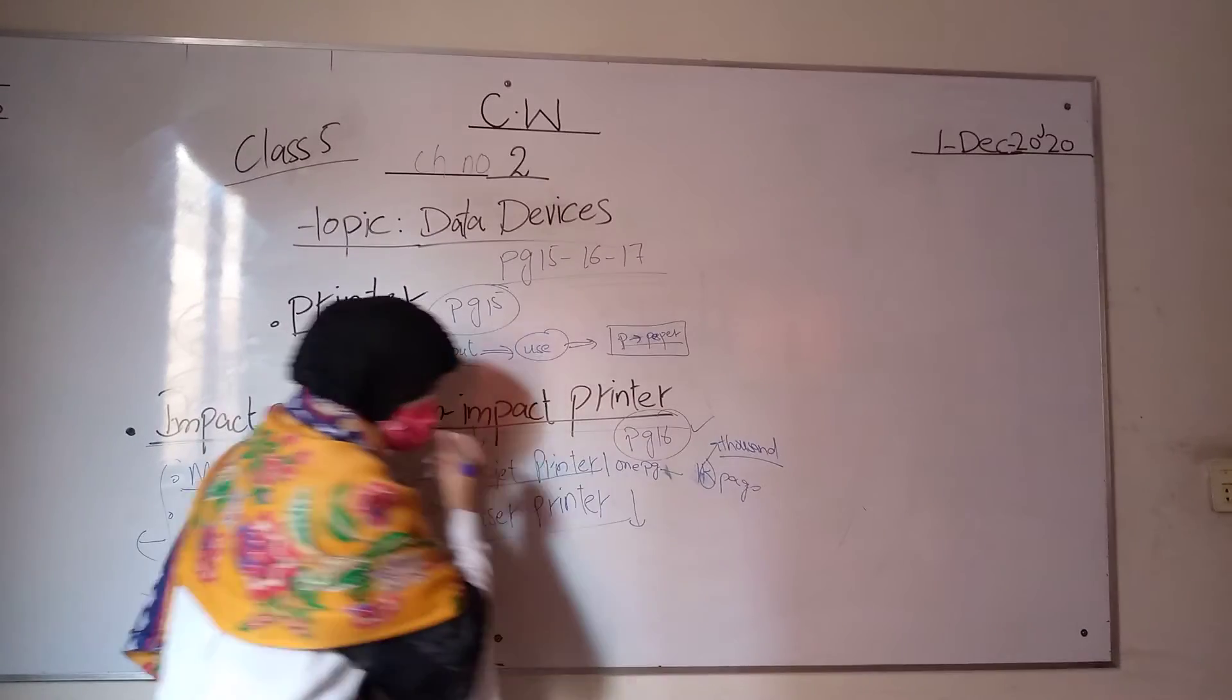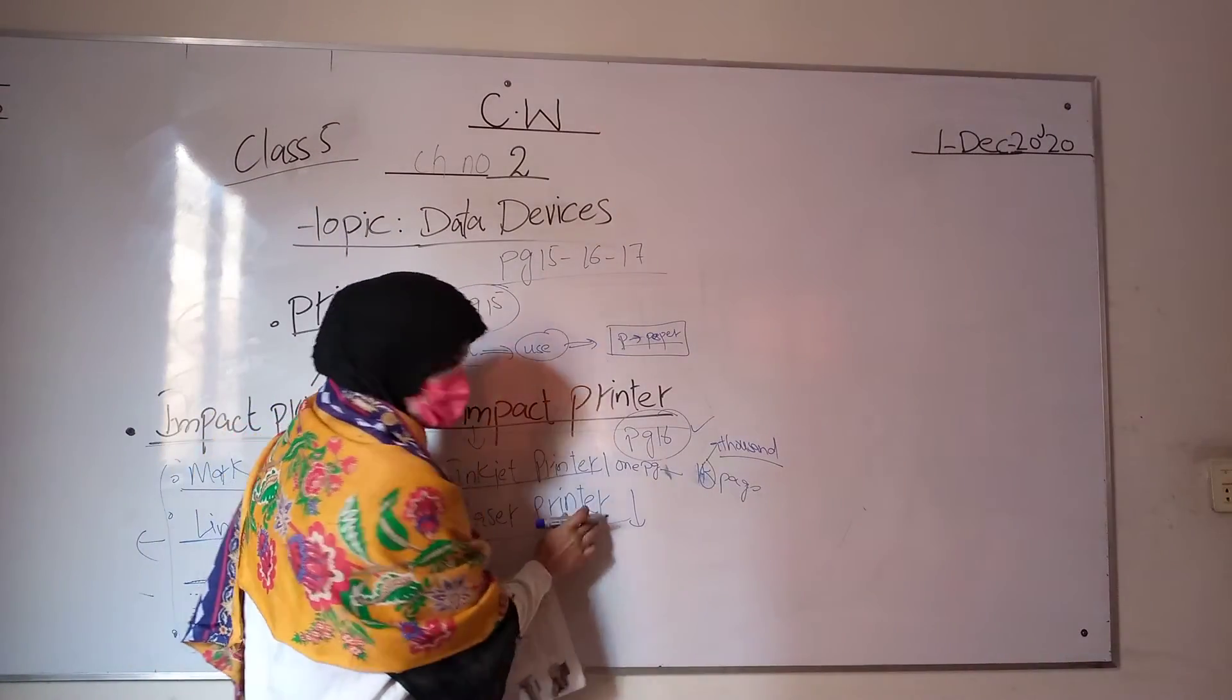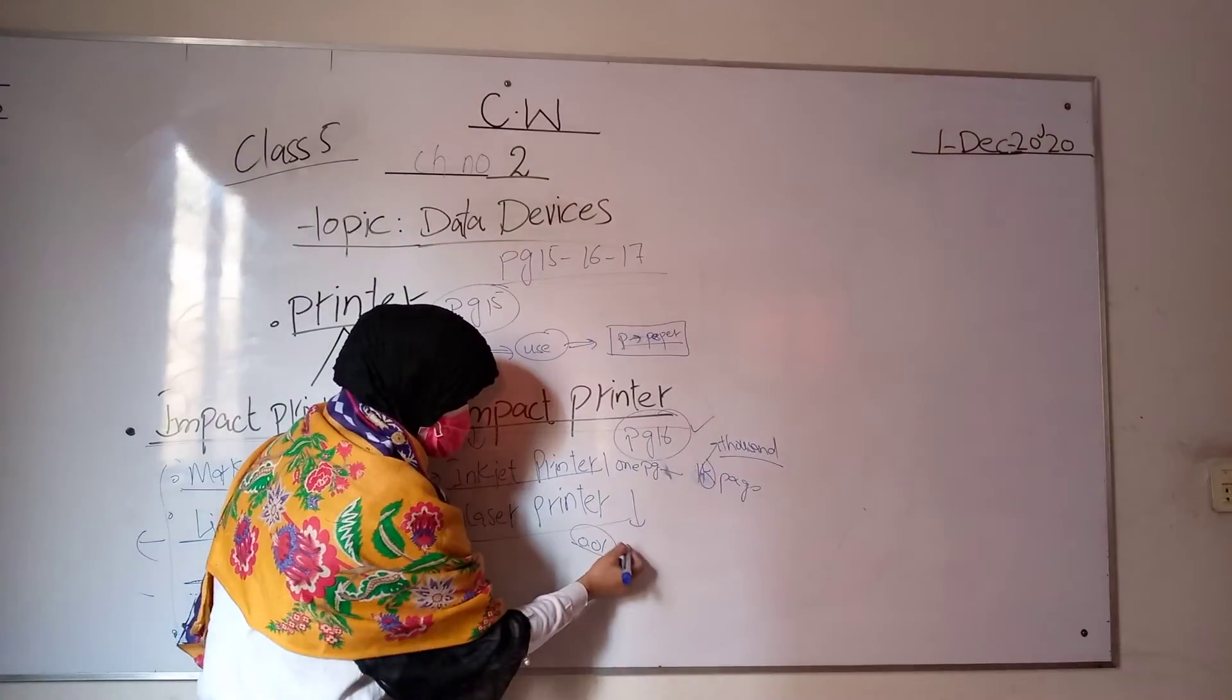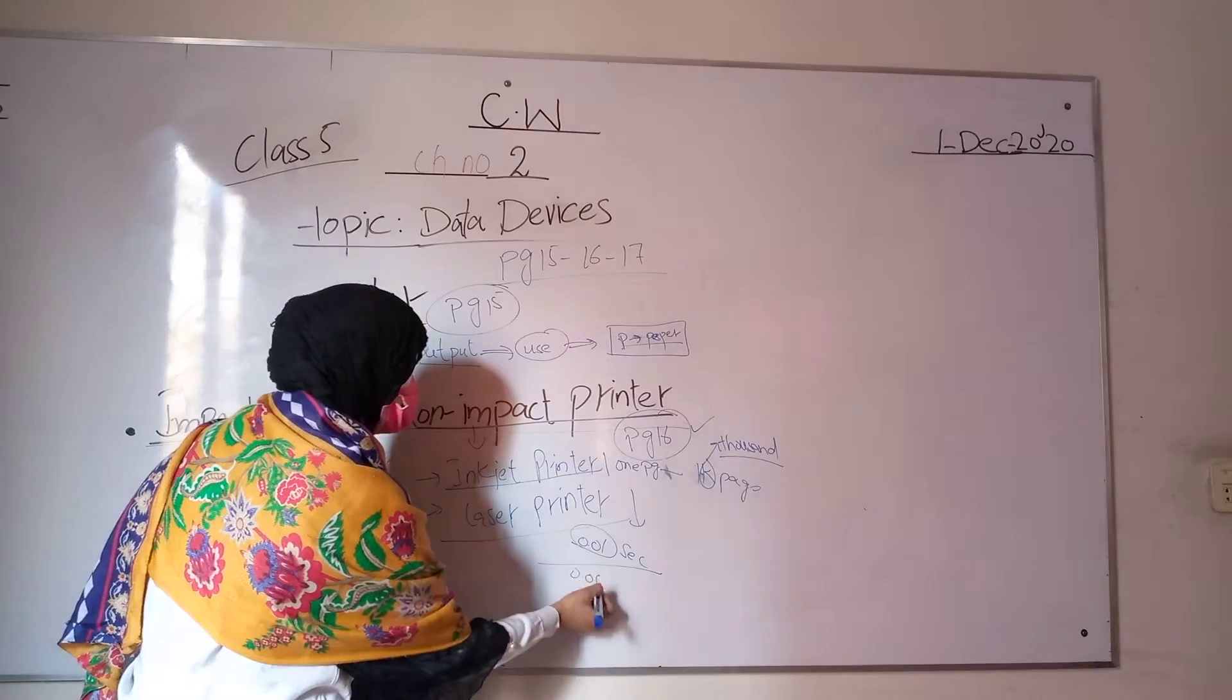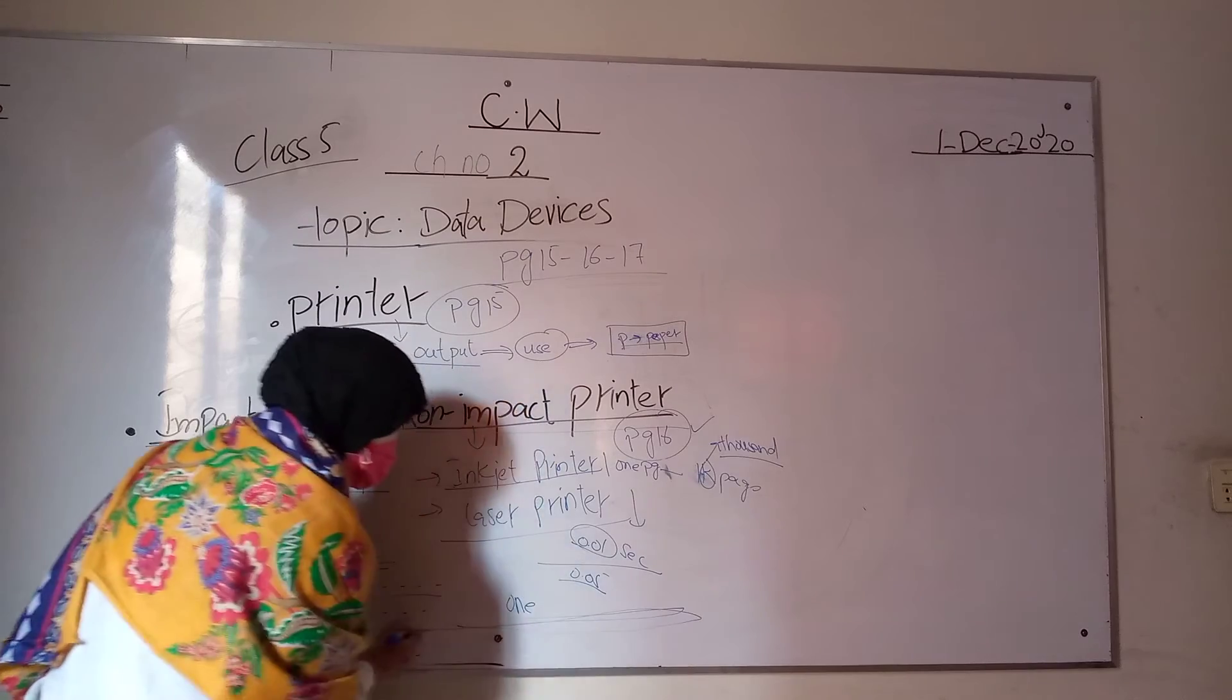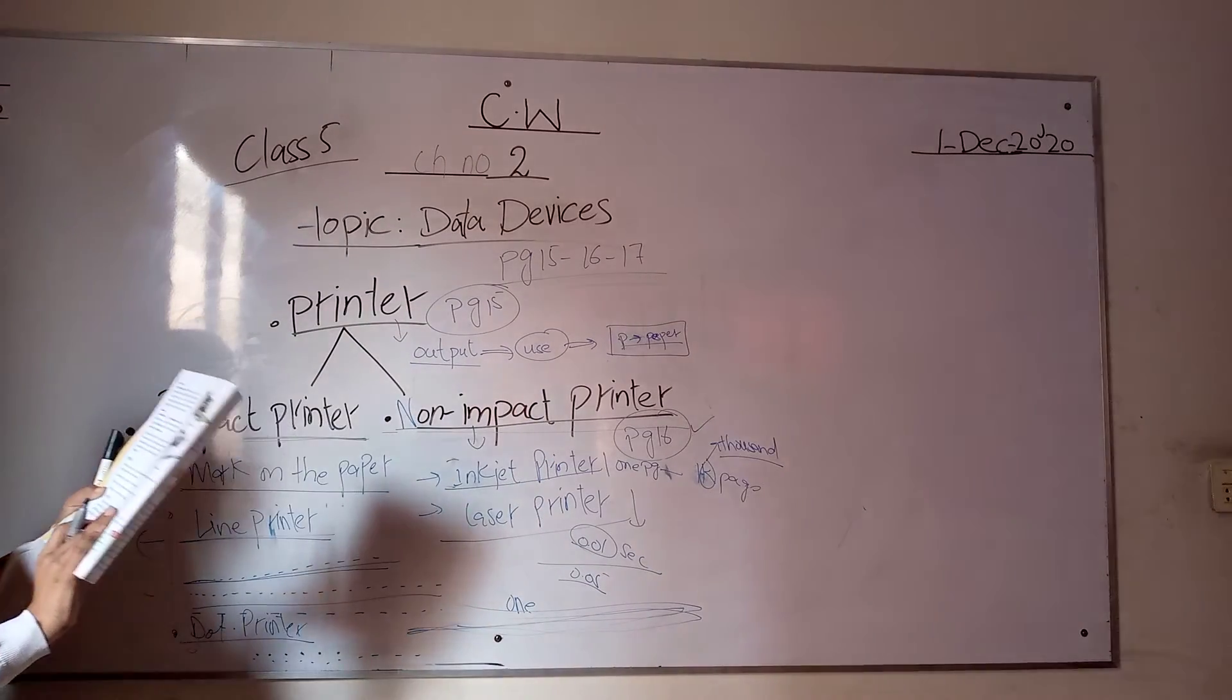Laser printers nowadays are very fast, printing in only 0.01 seconds. You can print one page in about 0.05 seconds. This is a laser printer.